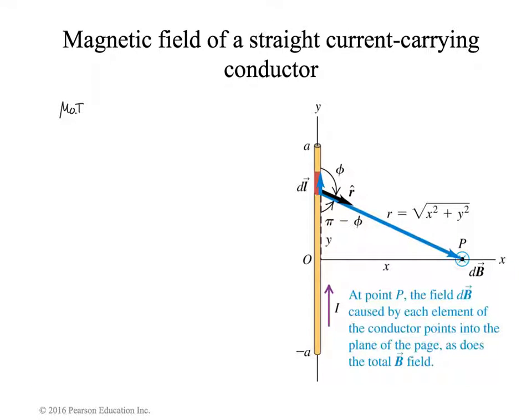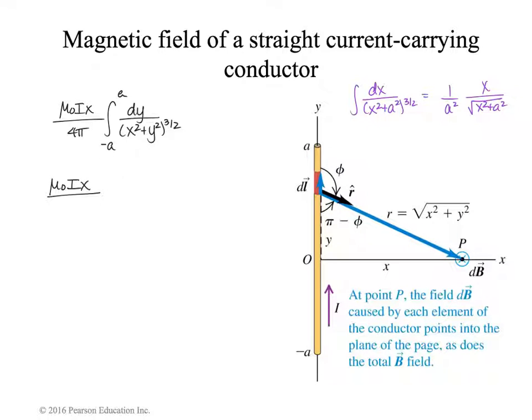So what we had was μ₀Ix over 4π times the integral of dy over (x² plus y²)^(3/2). And then for comparison's sake I'm going to put what we had for our integral table over here to make it separate. And so using that we can write our solution. The integration of this integral would be written comparing to this form, it would be 1 over x² times y over the square root of y² plus x². So hopefully you can see the similarities here. And then I have to evaluate it from minus a to a.